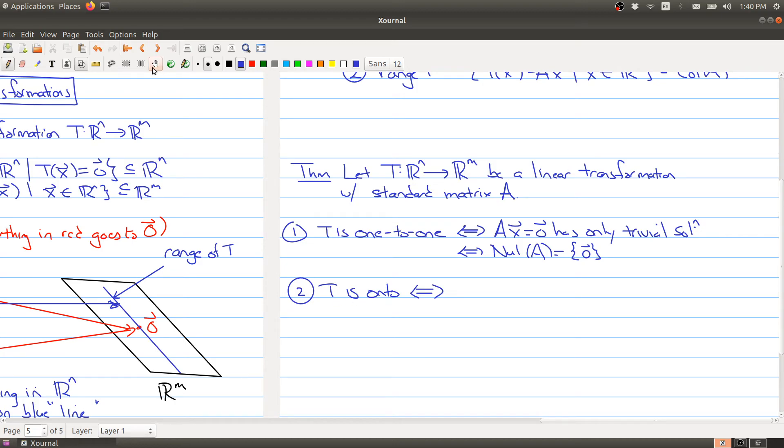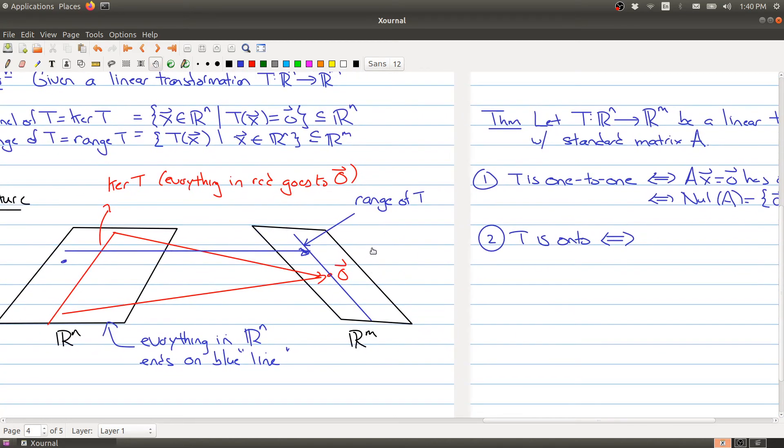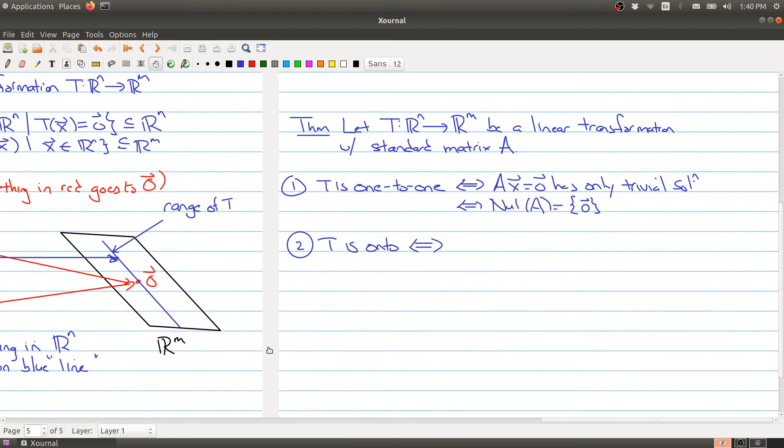And on the other hand, T is onto. So if you look at my picture here, if this was onto, we would have filled up all of Rm. So that means that the range of T, which is equal to the column space of A, is equal to Rm. And another way of saying that is just saying that the columns of A span Rm. So if you're trying to decide whether your function T is one-to-one or onto, you can actually look at either the column space or the null space to determine that information.